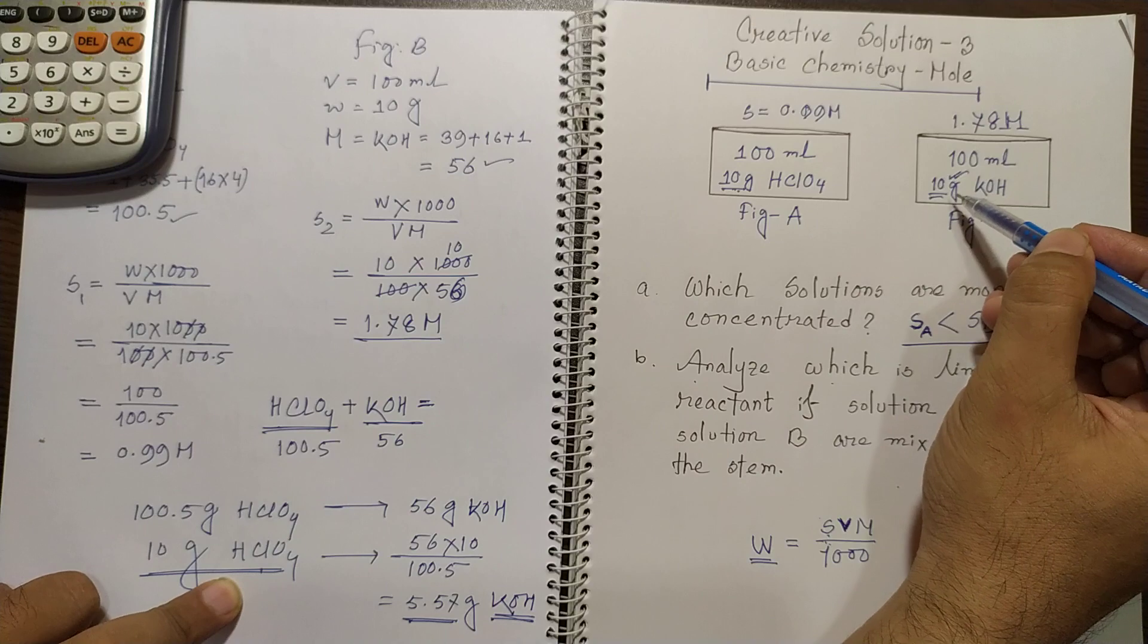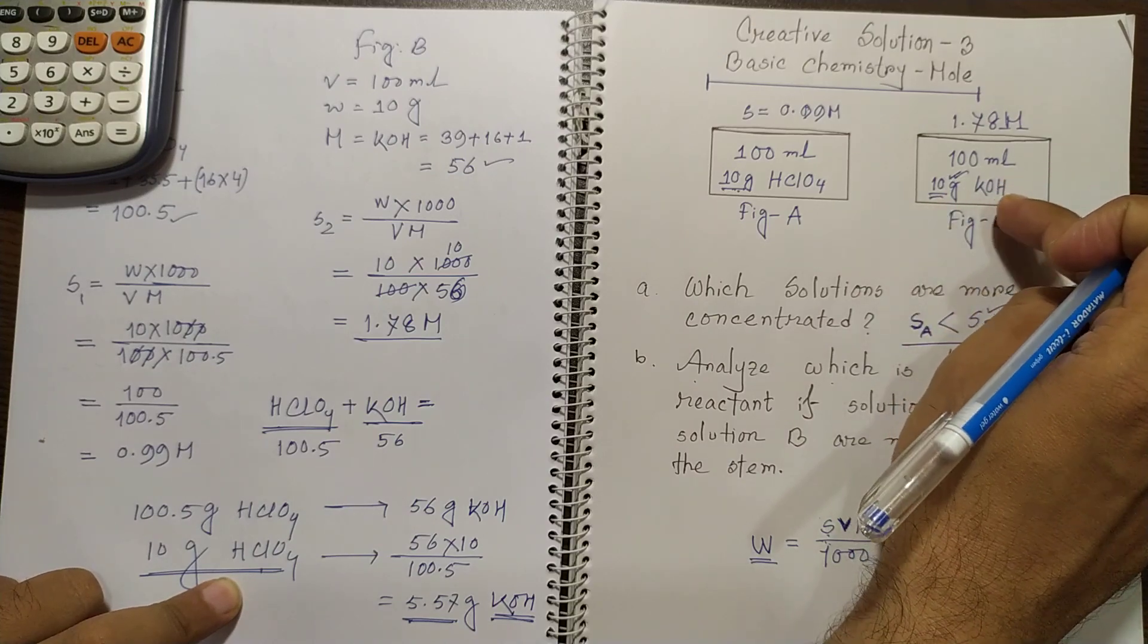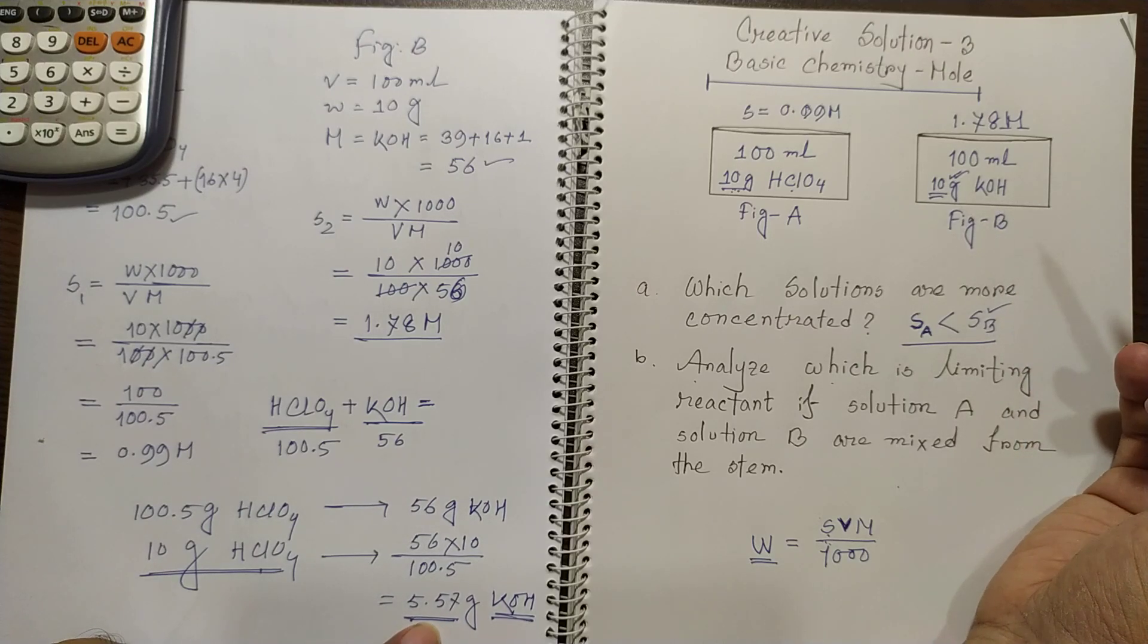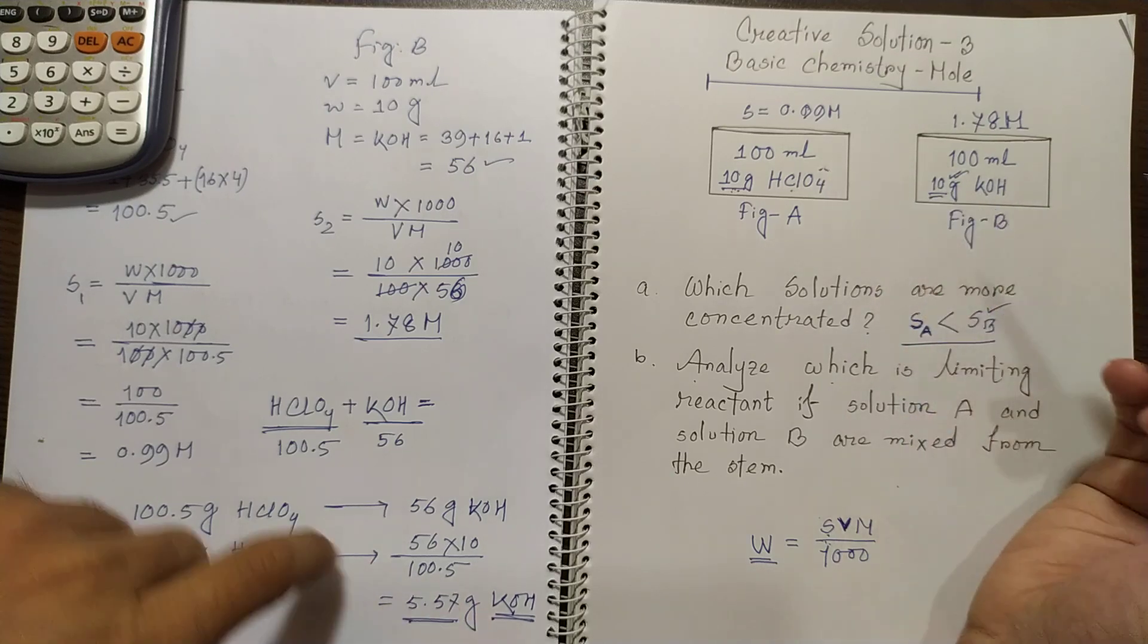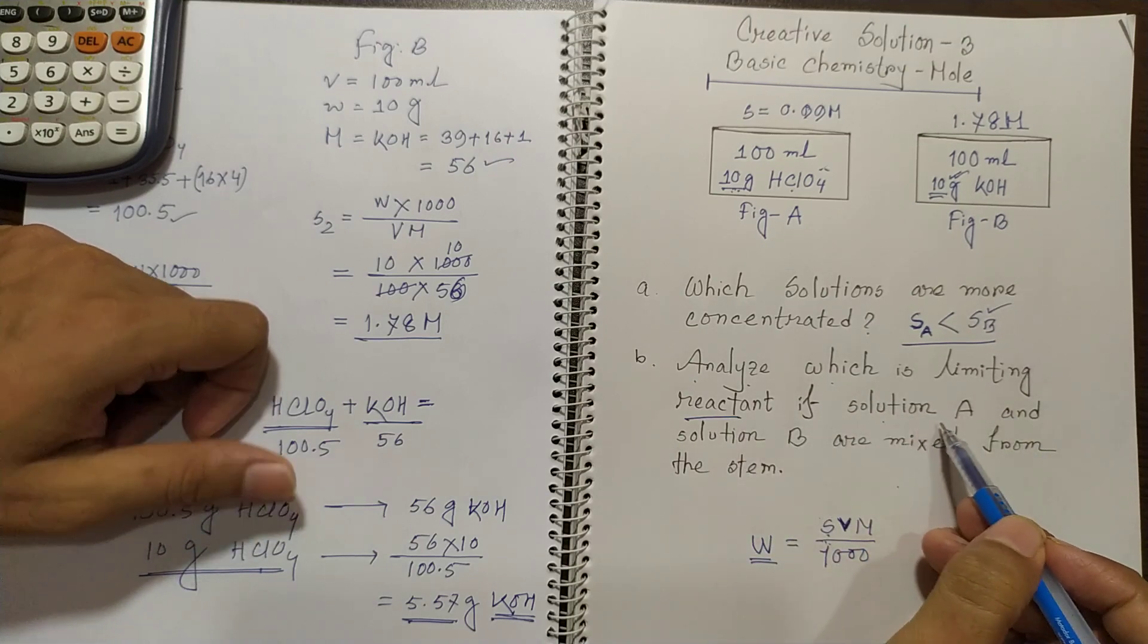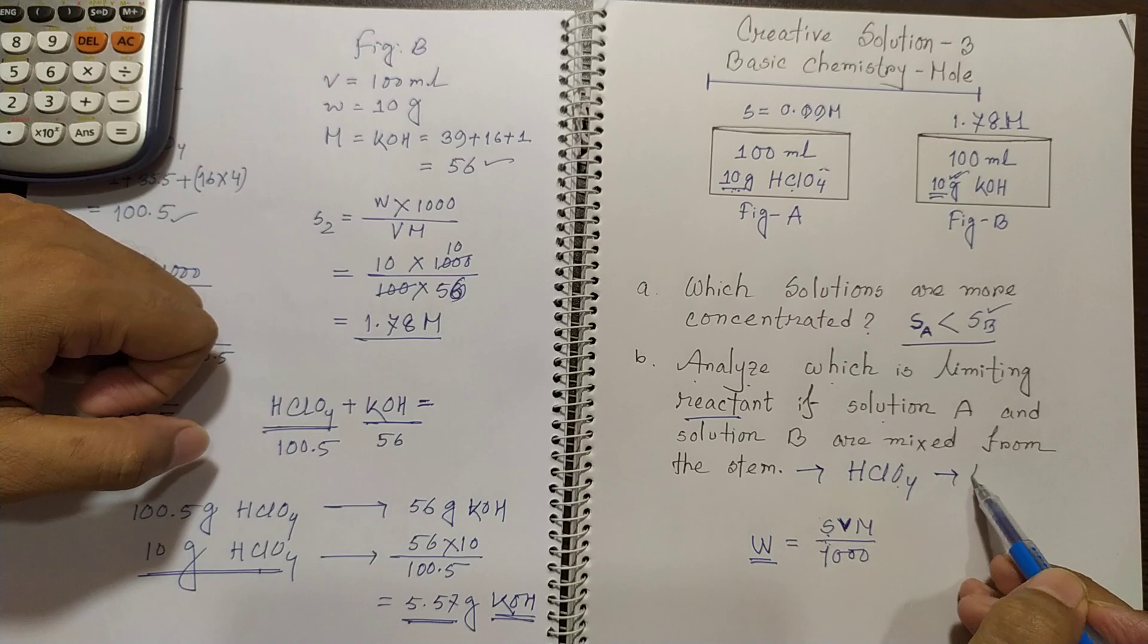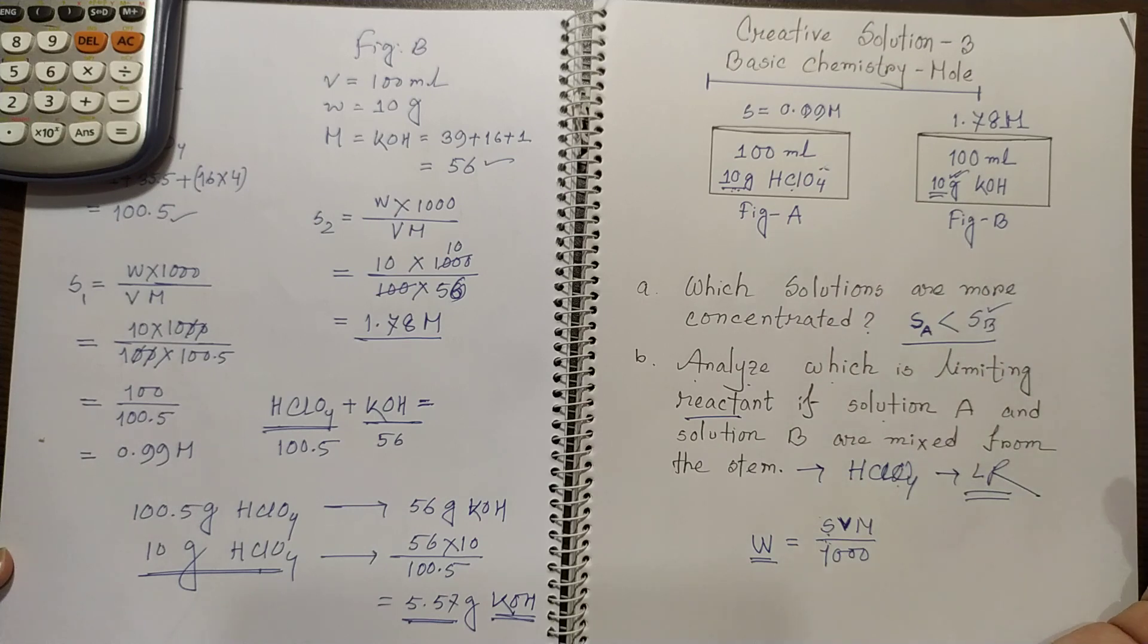But here 10 gram potassium hydroxide are present in figure B. So in this jar more potassium hydroxide are there. So you see that 10 gram perchloric acid will react with 5.57 gram potassium hydroxide. So we know that HClO4 will end first. So we can say that HClO4 is the limiting reactant.